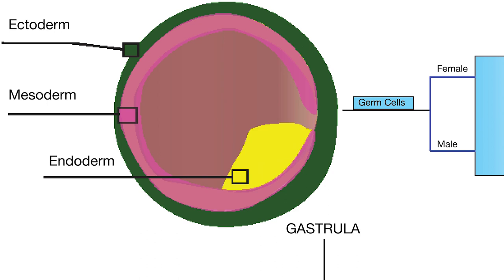The beginning of gastrulation takes place around the 16th day, or third week, after fertilization. It is the phase early in embryonic development during which the single-layered blastula is reorganized into a trilaminar, or three-layered, structure known as the gastrula. These three germ layers are known as ectoderm, mesoderm, and endoderm.